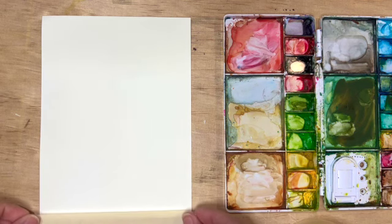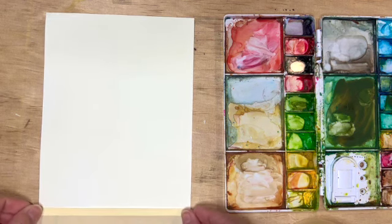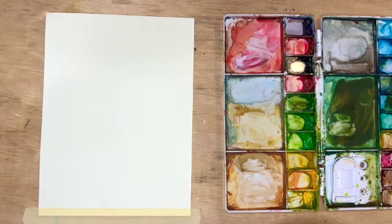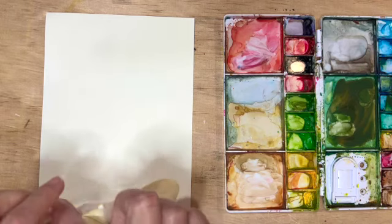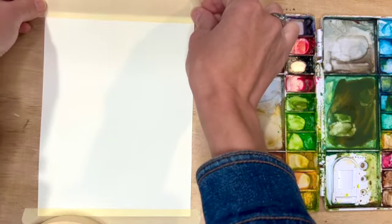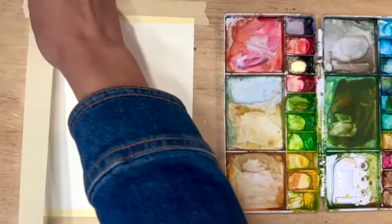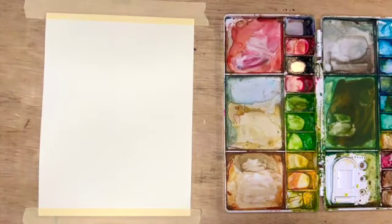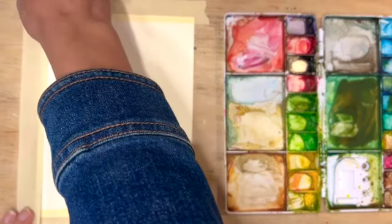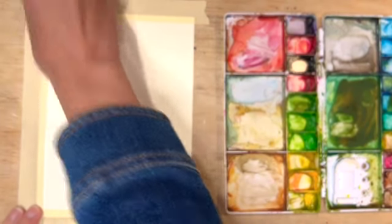I am beginning by taping my paper down to a board using masking tape. I am doing this so that my paper doesn't wrinkle when I add lots of water to it, and I also like the white border that it leaves when I am finished.